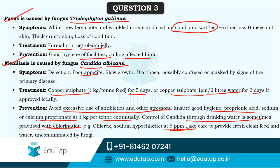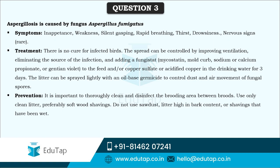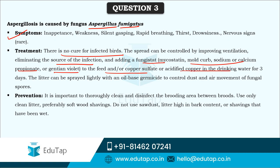Fresh, clean food needs to be given along with fresh water uncontaminated by this fungi. Aspergillosis is another fungal disease caused by Aspergillus fumigatus. Symptoms include inappetence, weakness, silent gasping, rapid breathing, nervous signs (which are rare), thirst, and drowsiness. There is no cure for infected birds as such, but the spread can be controlled by improving ventilation, eliminating the source of infection by culling birds, and adding fungistats like mycostatin, mold curbs, sodium or calcium propionate, or gentian violet to the feed. Copper sulfate or acidified copper can be added to drinking water for three days. The litter can also be sprayed lightly with an oil-based germicide to control dust and air movement of fungal spores.